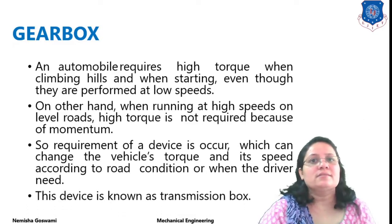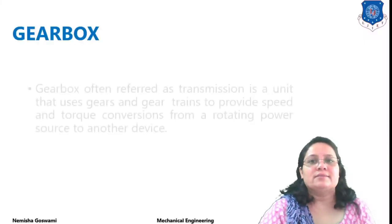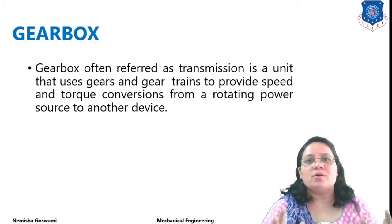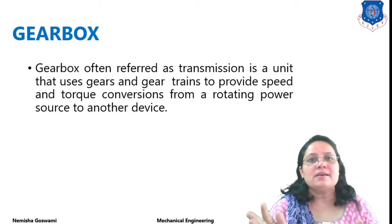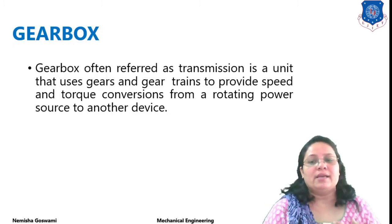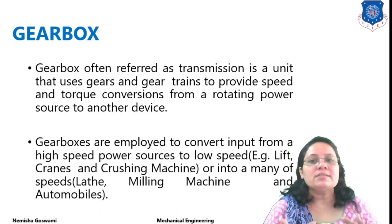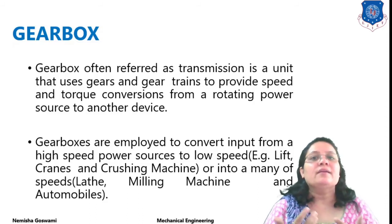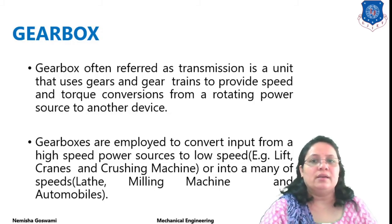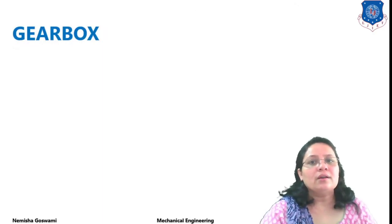This device is known as a Gearbox, also known as a transmission box or transmission device. A Gearbox is also referred to as a transmission unit because it uses different types of gears combined at one place to change speed or torque as required. It is also used to provide speed and torque conversion from a rotating power source to another device. Gearboxes are employed to convert input from higher speed power to low speed — for example, in lift cranes, crushing machines — or into many speeds, for example in milling machines, automobiles, and CNC machines.